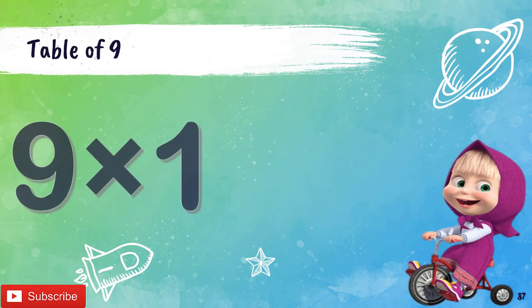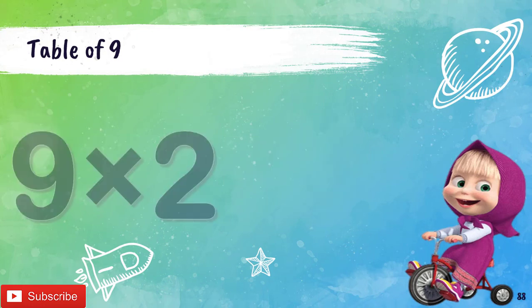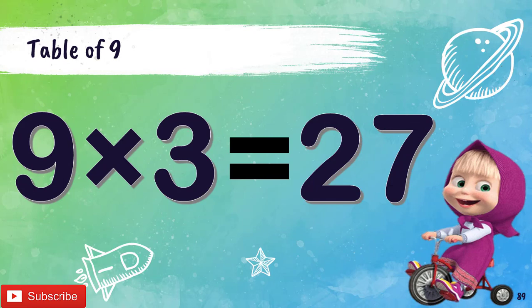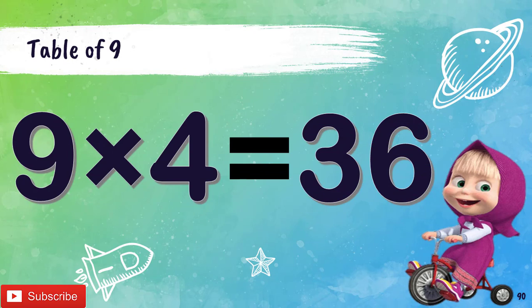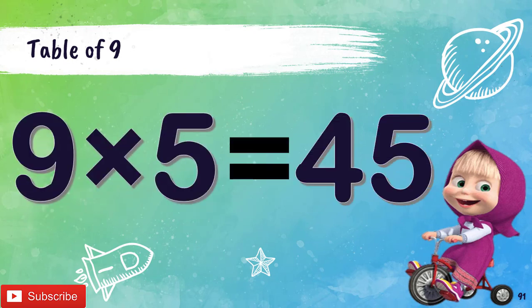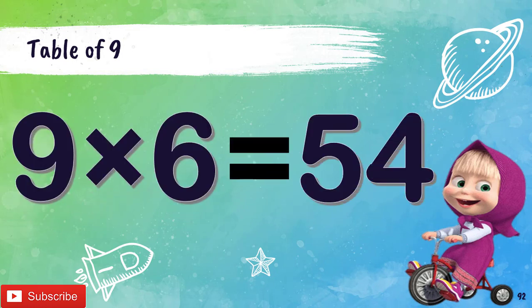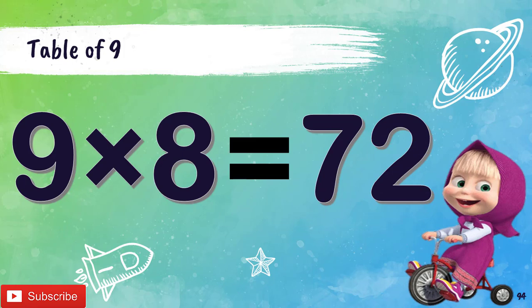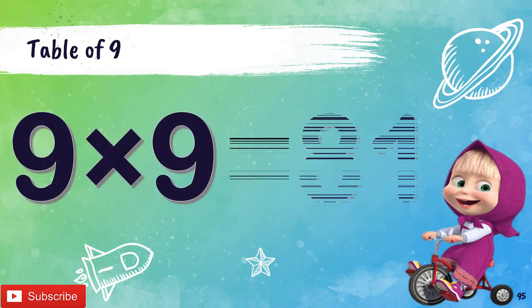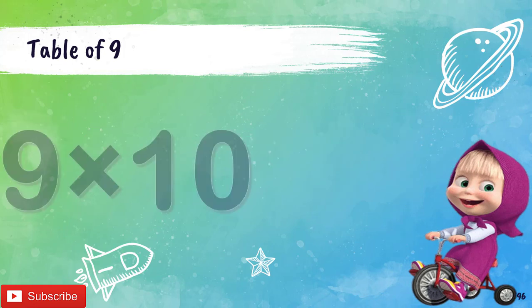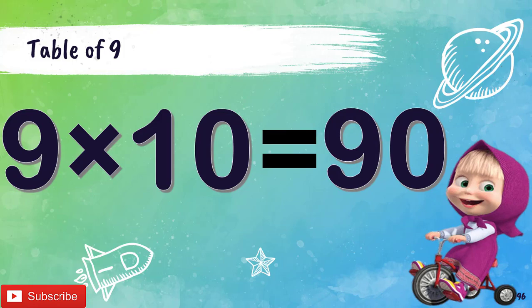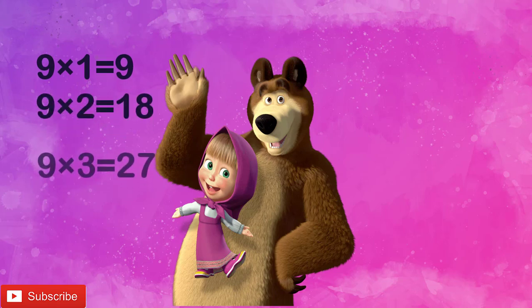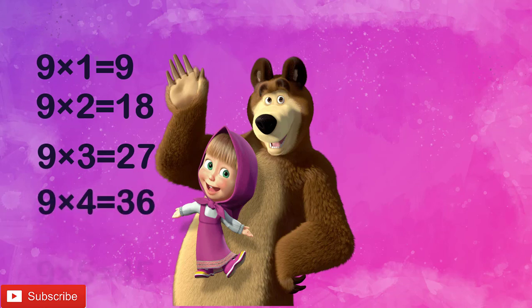Table of 9: 9 1's are 9, 9 2's are 18, 9 3's are 27, 9 4's are 36, 9 5's are 45, 9 6's are 54, 9 7's are 63, 9 8's are 72, 9 9's are 81, 9 10's are 90.